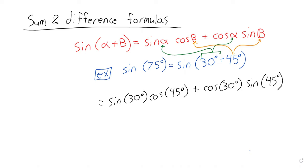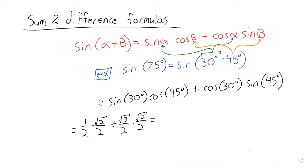Now, 30 degrees is pi/6, so the sine of 30 degrees is 1/2. 45 degrees is pi/4, so the cosine of 45 degrees is √2/2. The cosine of 30 degrees is √3/2, and the sine of 45 degrees is also √2/2 — it's the angle whose sine equals its cosine. So we get (√2)/4 plus (√6)/4.